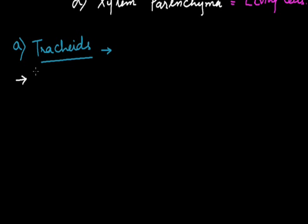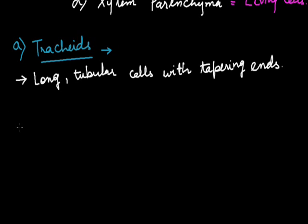We will discuss all these four different type of cells one by one. The xylem tracheids. These xylem tracheids are basically made up of long tubular cells with tapering ends. Their wall is highly thick due to deposition of lignin. So they possess thick walls with deposition of lignin.